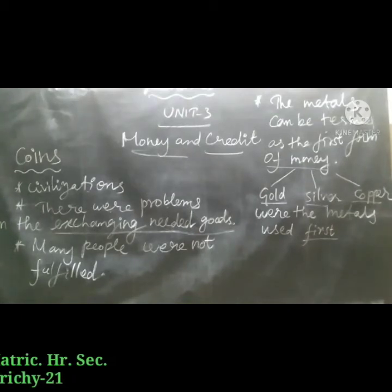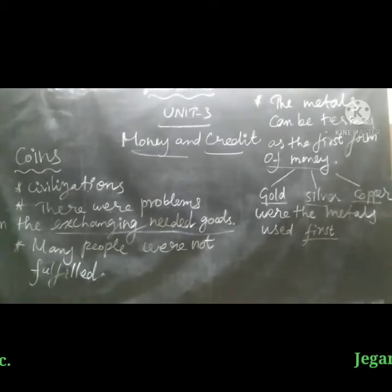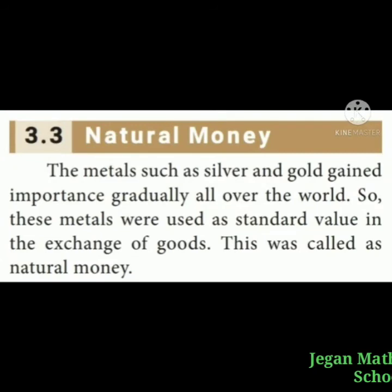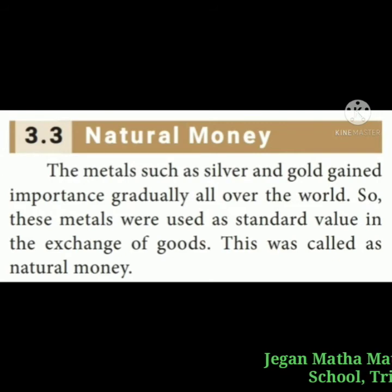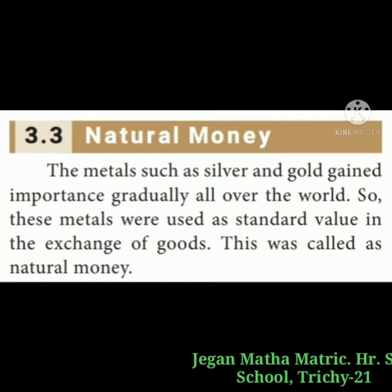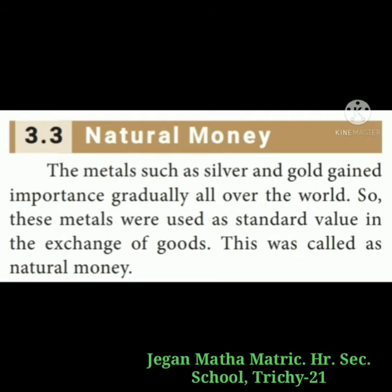Later, Cholas allowed traders to have their own army. By historical evidence, it is stated that during this period, smaller traders and producers gave credit to Tamil traders to support their export needs. Next, let us discuss the topic: Natural Money. Metals such as silver and gold gained importance gradually all over the world. These metals were used as standard value in the exchange of goods. This was called natural money.